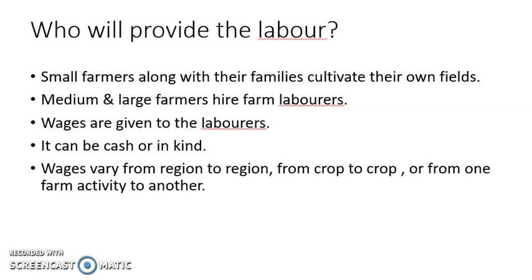Hello students, good morning everyone. Today we are continuing our lesson — the Story of Palampur. We are at the last topic: who will provide the labor? Labor is one of the important factors of production. We have been discussing the factors of production one by one. Land we have just discussed — land is fixed in Palampur, and there are various measures to increase production on a given piece of land. The next important factor of production is labor.